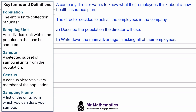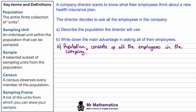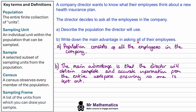Welcome back. To describe the population the director will use: the population consists of all the employees in the company. For part B, the main advantage in asking all of their employees is that the director will obtain complete and accurate information from the entire workforce, ensuring that no one is left out.